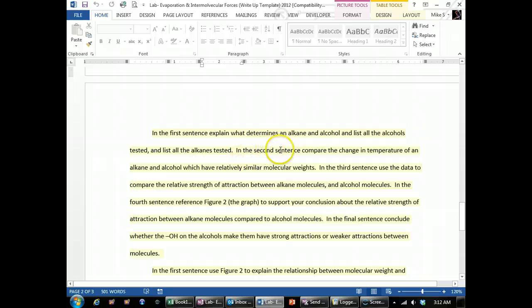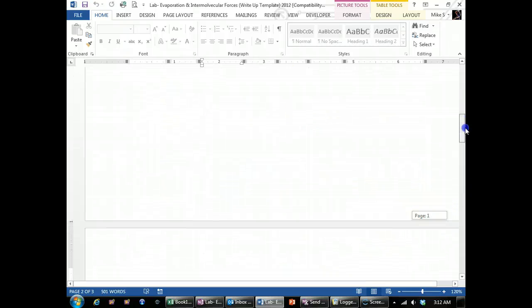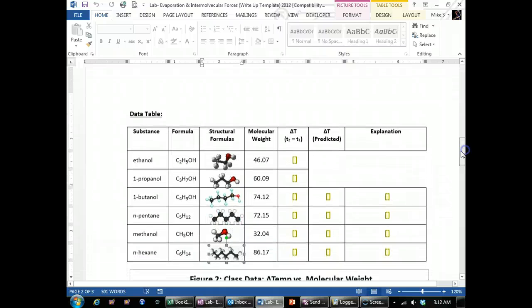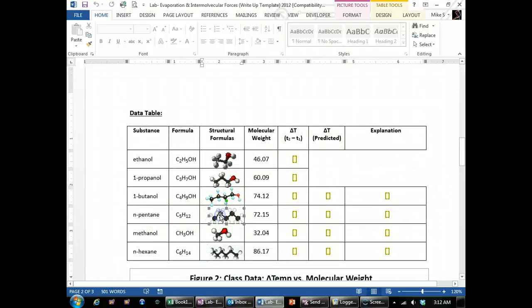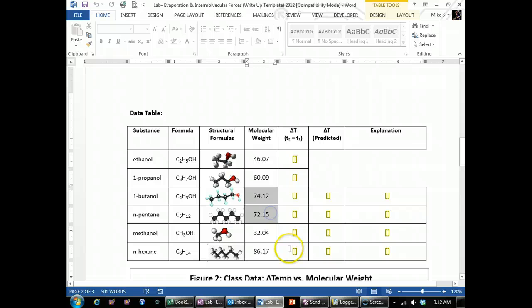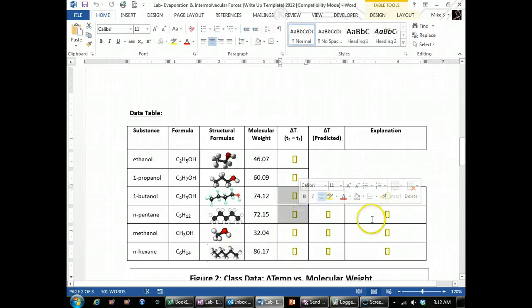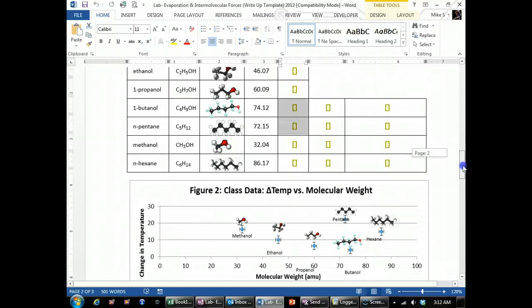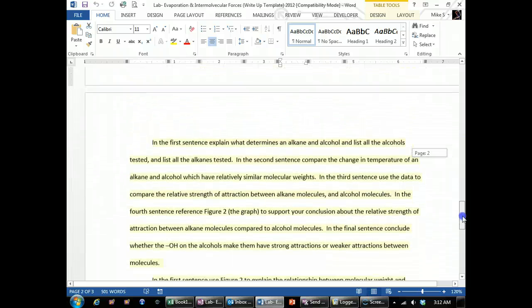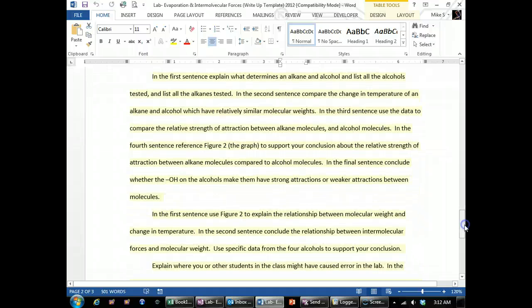So look at all your alkanes and alcohols and list which ones are which. And then in the second sentence, compare change in temperature of an alkane and alcohol with relatively similar molecular weights. So if you look up here, what they're asking for is for you to find a molecule that's an alkane and a molecule that's an alcohol that have relatively similar molecular weights and compare their delta Ts to each other and then compare their relative attraction between molecules or make a conclusion about those.